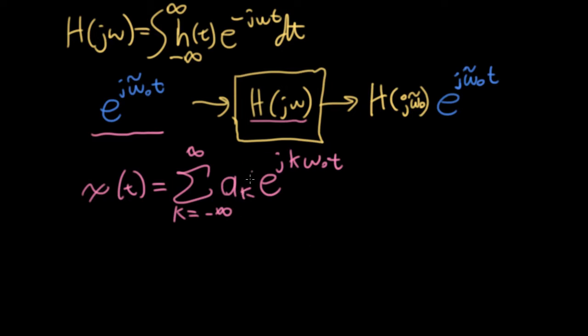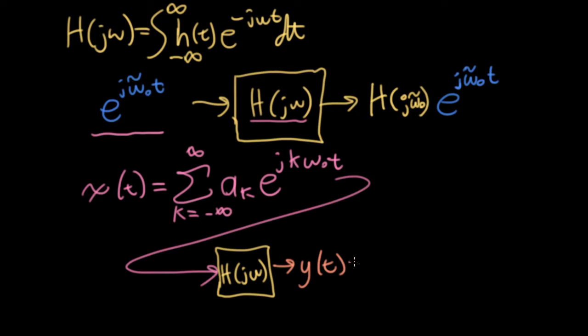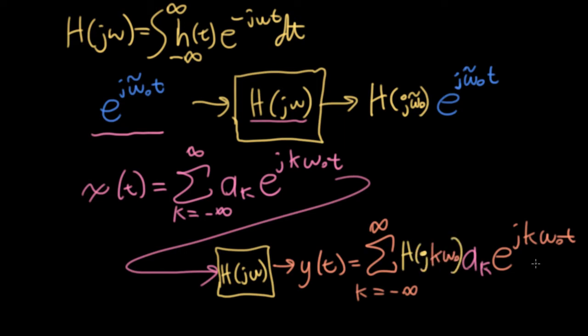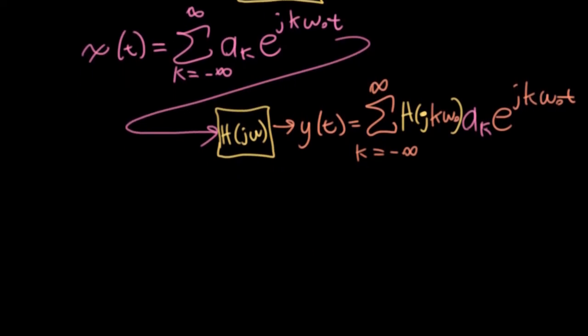Similarly, for each of those sinusoids, the aₖ is just a constant that pulls out in front for each of the sinusoids. So if we take that and put that into a system with the frequency response big H(jω), what we get out is going to be a sum of sinusoids e^(jkω₀t) going from minus infinity to infinity. And the only real difference is each of these aₖ's is going to be multiplied by the frequency response evaluated at kω₀.